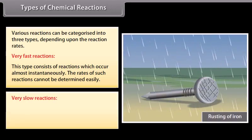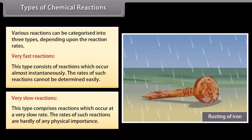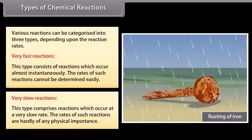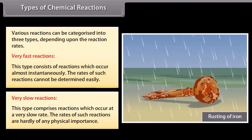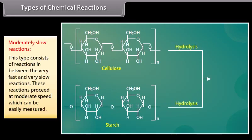Very slow reactions: this type comprises reactions which occur at a very slow rate; the rates of such reactions are hardly of any physical importance. These reactions may require months or even years for their completion. For example, rusting of iron. Moderately slow reactions: this type consists of reactions in between the very fast and very slow reactions. These reactions proceed at a moderate speed which can be easily measured. For example, hydrolysis of starch.